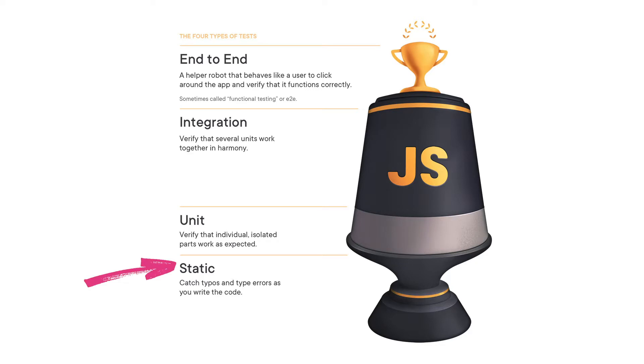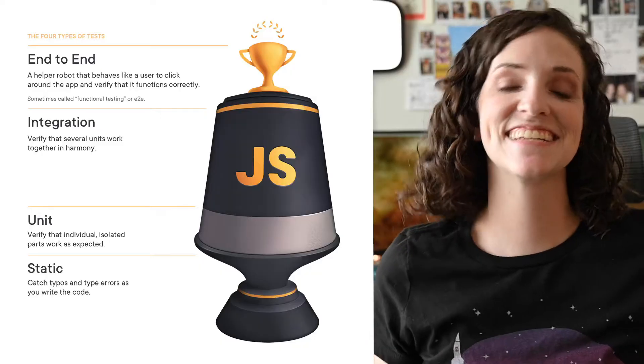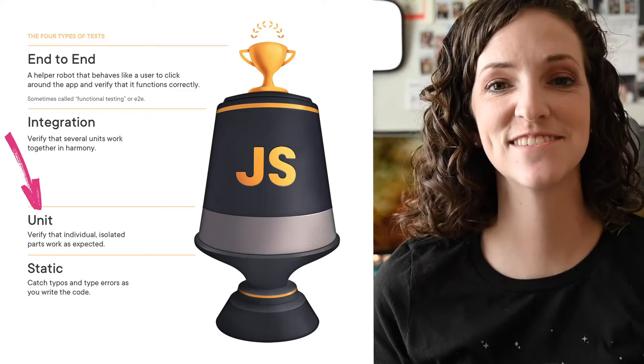At the very bottom you have static tests, and these are like your low-hanging fruit — typos and type errors. A lot of these you can catch by adding default prop types. I'll show you how to do that when we jump into the code. If you use Flow or TypeScript, it handles these things too. Next up is unit testing. This is when you test small, individual, isolated pieces of your code. We created a utility function called Slugify, and in this series we'll write a test for that function — and that's a unit test since it's a small, individual, isolated piece of code.